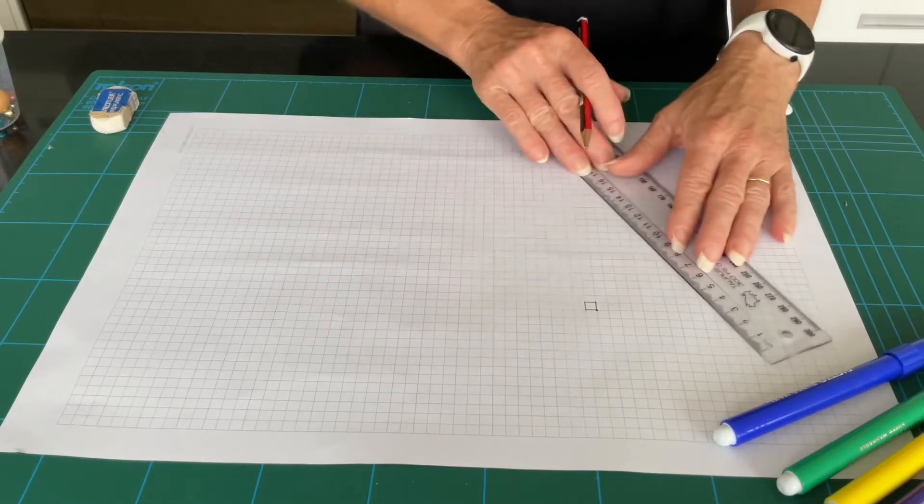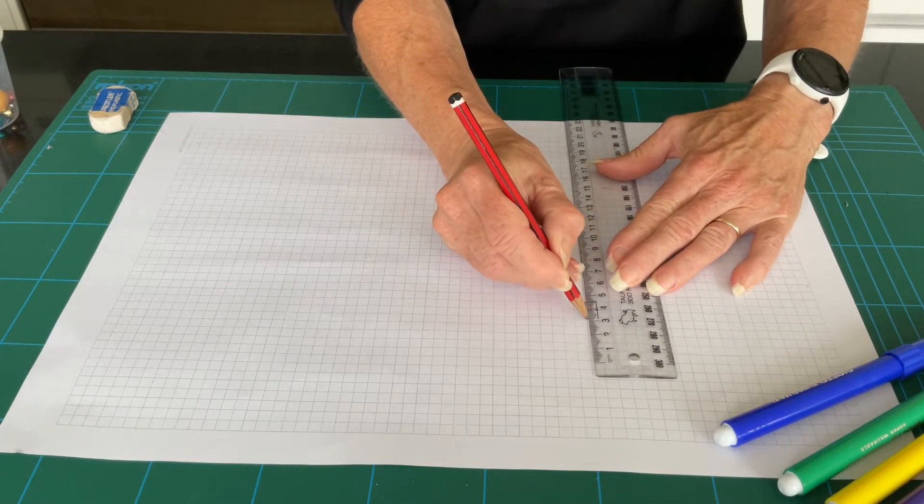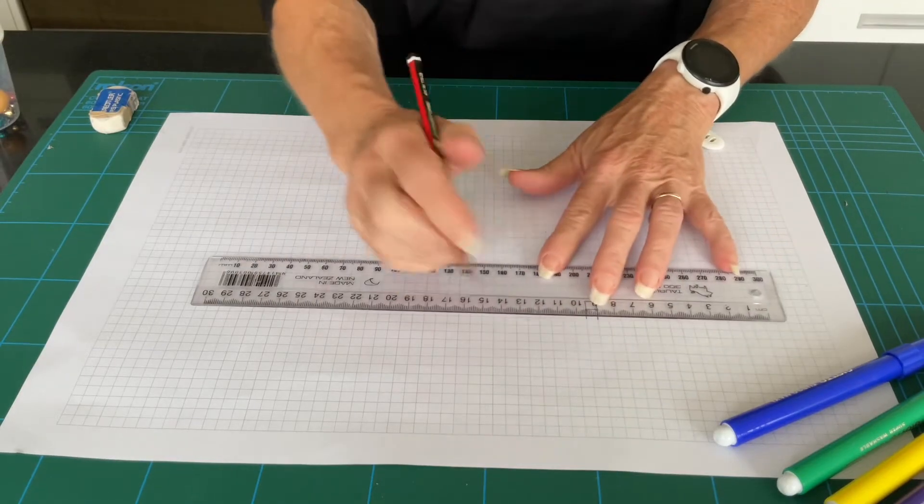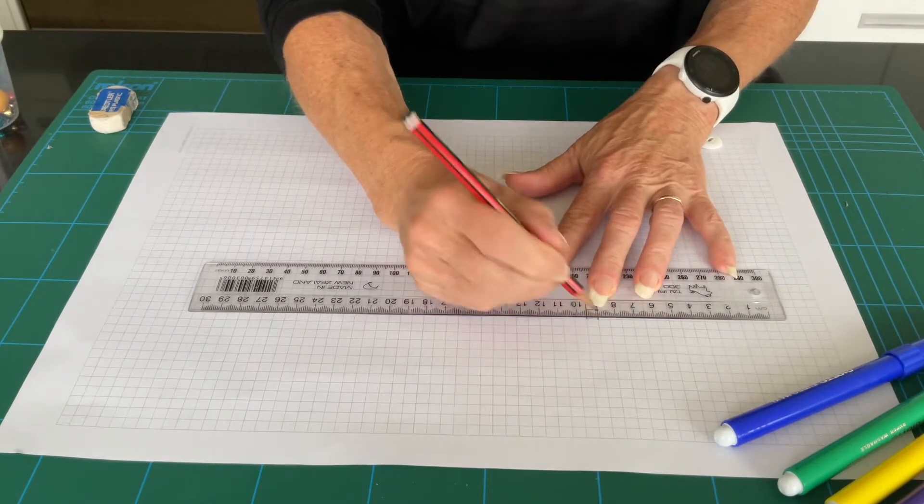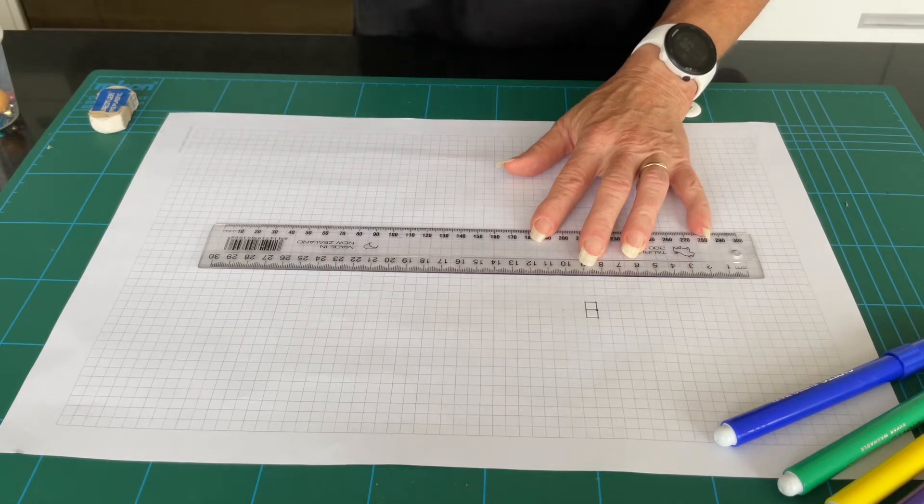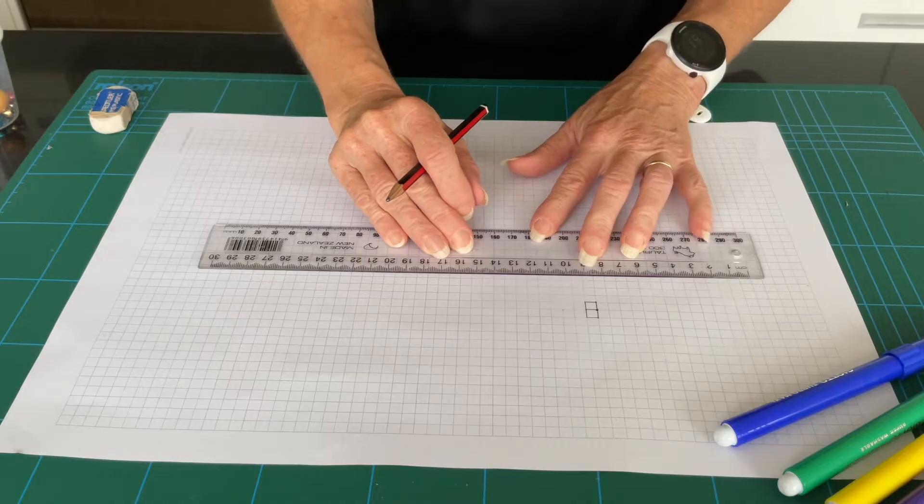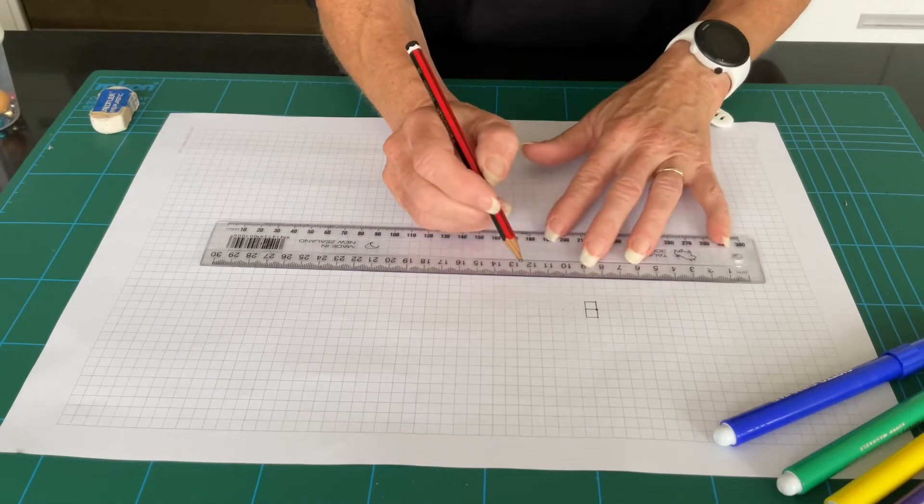Now draw another 1 by 1 square below that. The next number in the sequence is 2. Draw a 2 by 2 square to the right of the 2 squares that we've just made.